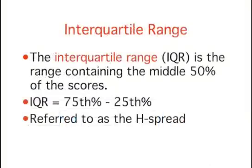A second measure of variability is the interquartile range, which is the range that contains the middle 50% of the scores. The interquartile range is calculated by subtracting the 25th percentile from the 75th percentile.